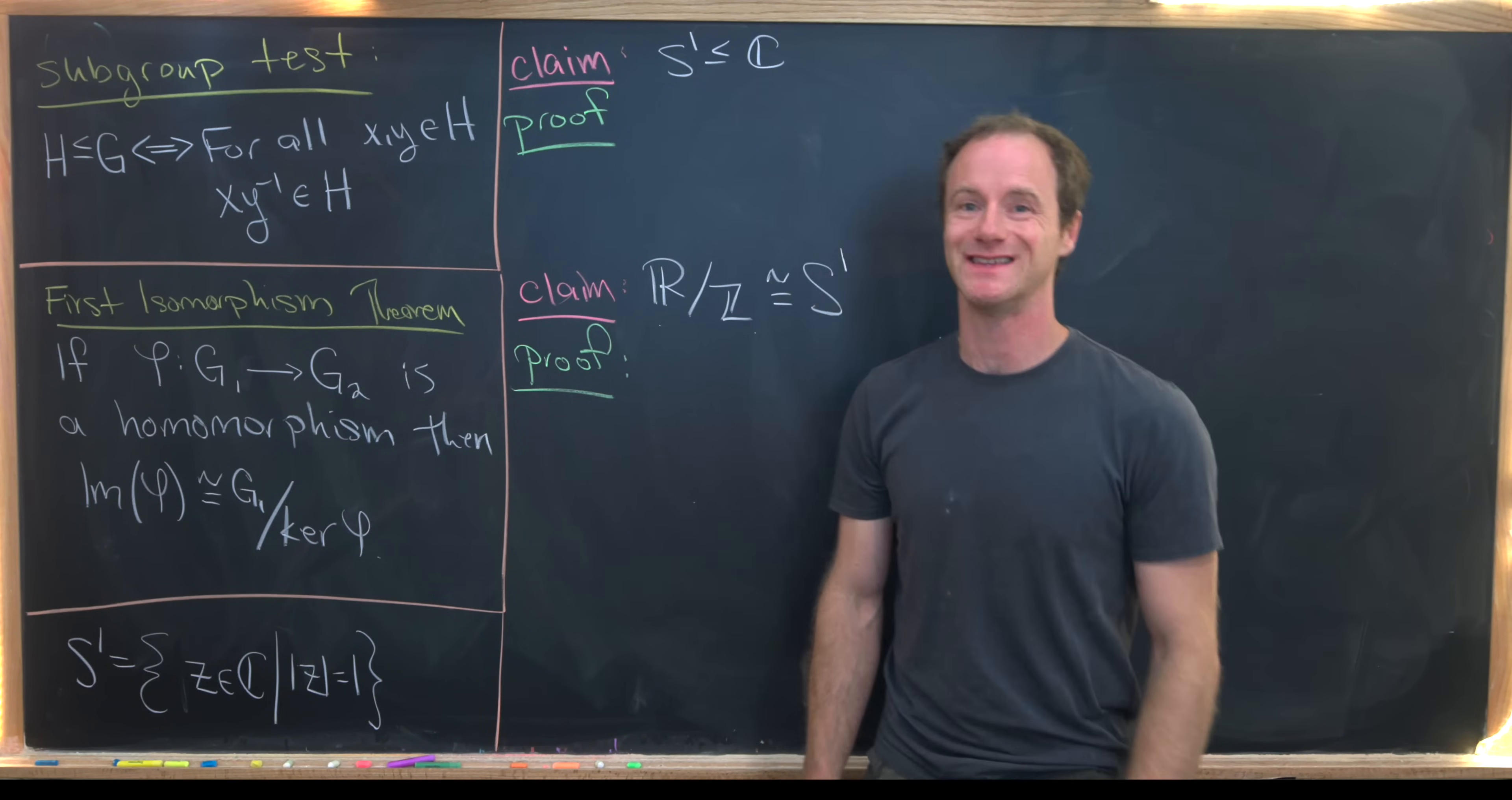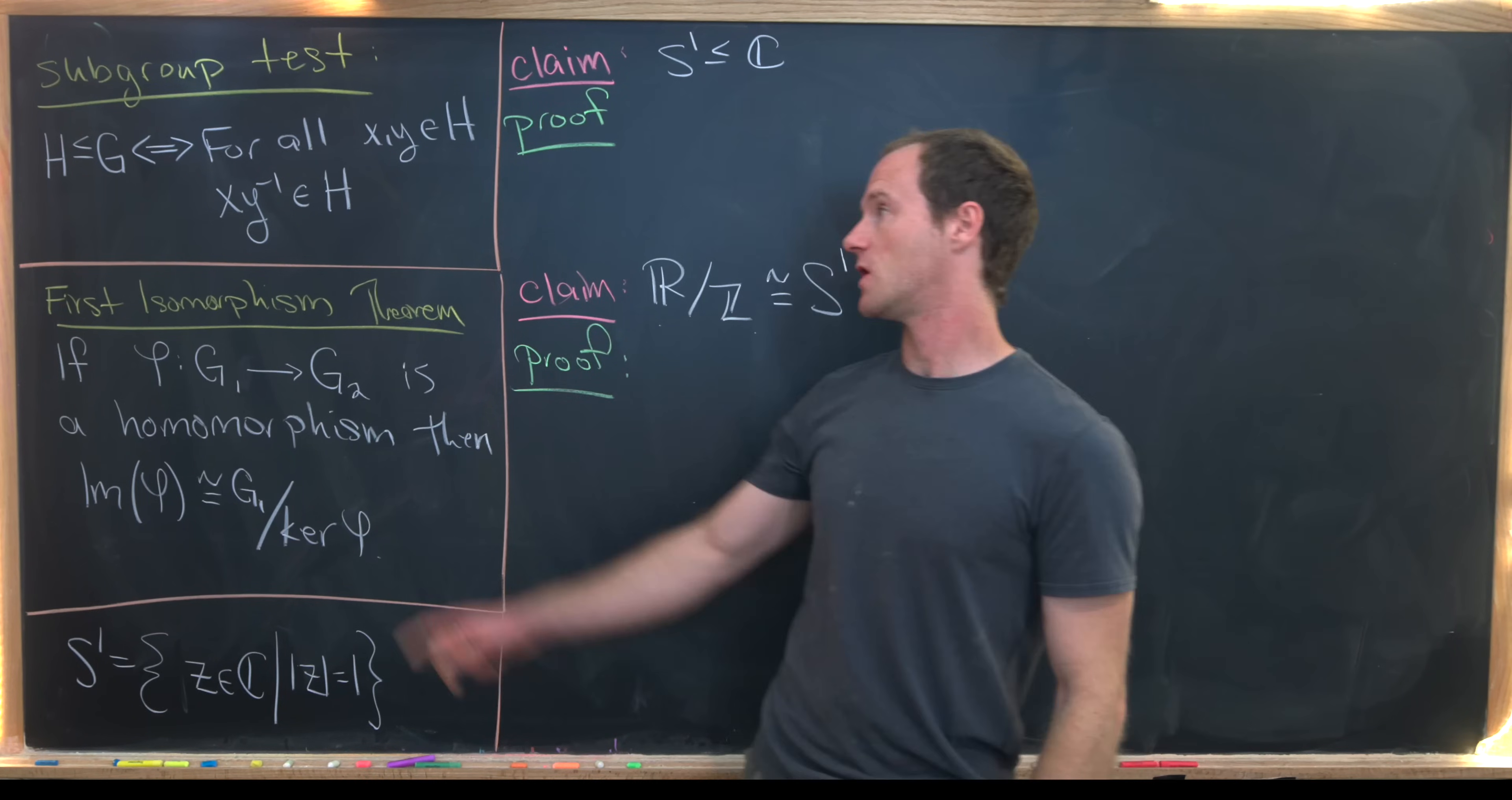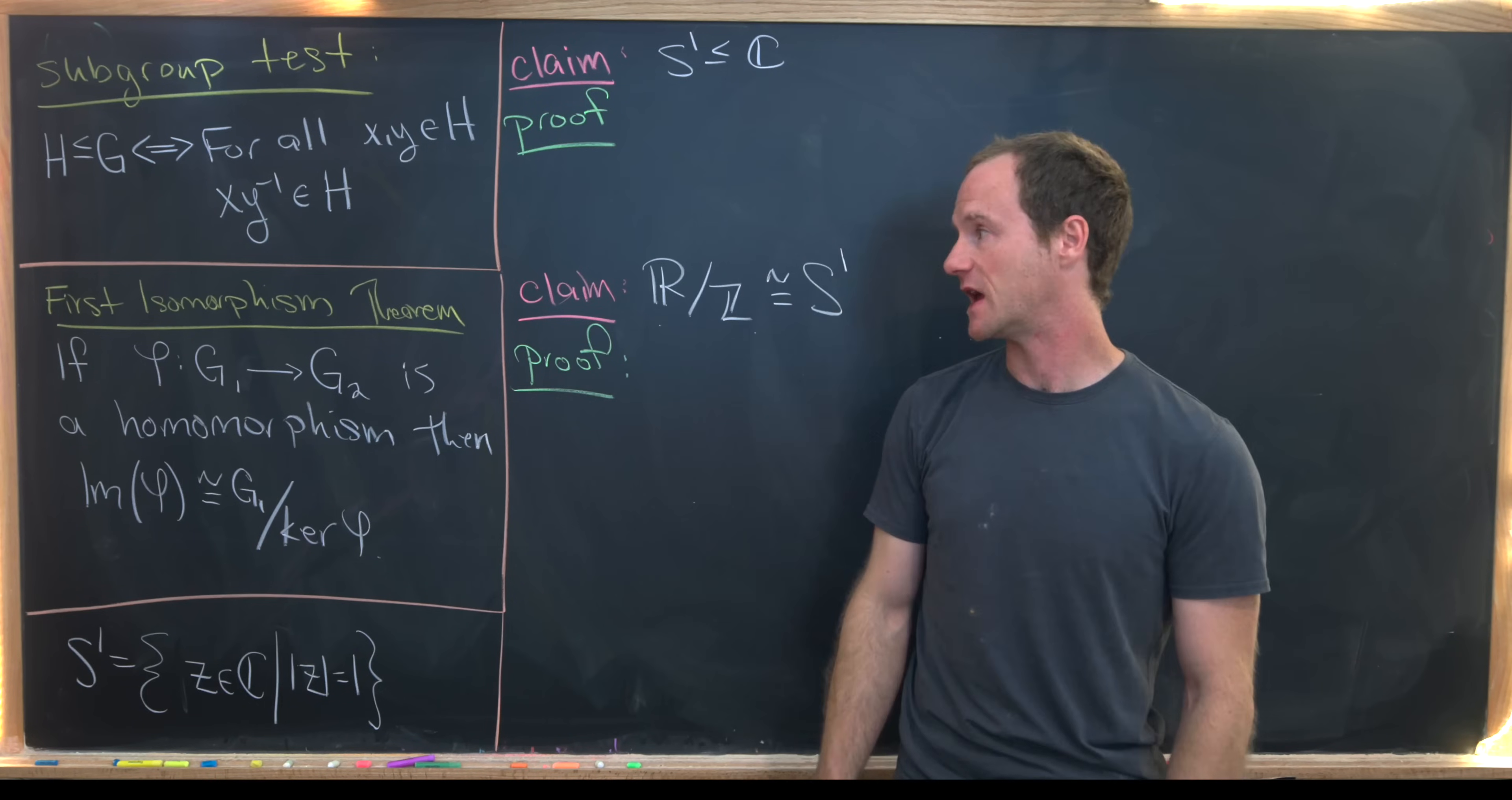So the first is that of the subgroup test. I'm assuming some knowledge of groups in this video. Let's recall that H is a subgroup of G if and only if for all X, Y in H, X times Y inverse is in H.